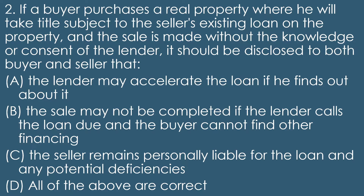Question number two: if a buyer purchases real property where he'll take title subject to the seller's existing loan, and the sale is made without the knowledge or consent of the lender, it should be disclosed to both buyer and seller that — A) the lender may accelerate the loan if he finds out, B) the sale may not be completed if the lender calls the loan due and the buyer cannot find other financing, C) the seller remains personally liable for the loan and any potential deficiencies, D) all of the above are correct. You need to know that 'subject to' is a specific term — not just a regular loan assumption.